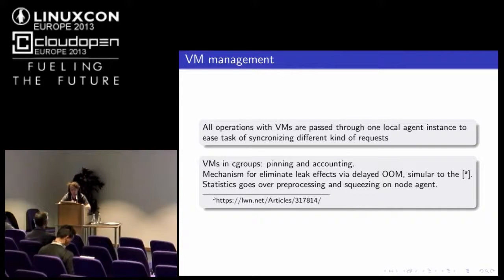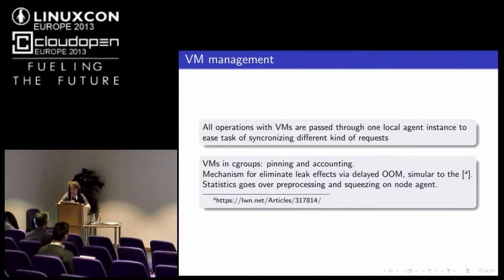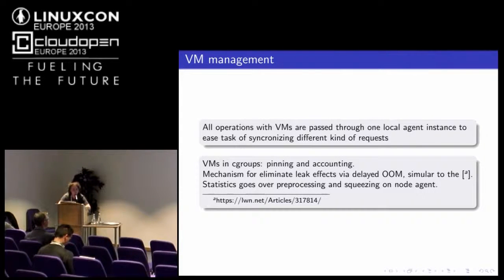We had a problem with the same RBD driver where VMs eventually leaked memory and we were not able to fix it properly. So we introduced a delay-over mechanism similar to what Google did in 2007. When a VM triggers an OOM event inside the cgroup, we immediately move this VM to the freezer cgroup, then add some memory above the current limit, unfreeze it, and immediately migrate it. This resets the leak and we can still use the VM — it will not die. It's quite ugly but it works.